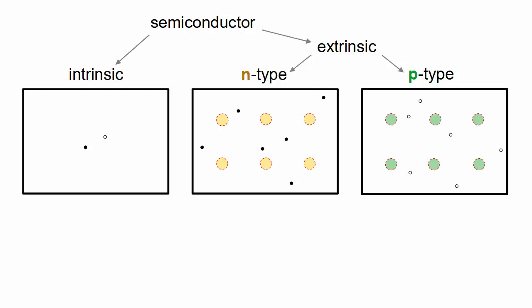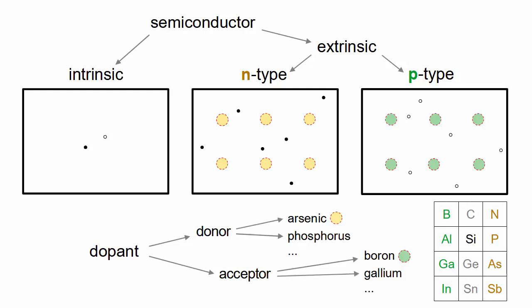A material added to silicon is called a dopant, which can be a donor or acceptor. In the periodic table, potential donors, like arsenic, are in the column just to the right of silicon, and potential acceptors, like boron, are in the column just to the left.